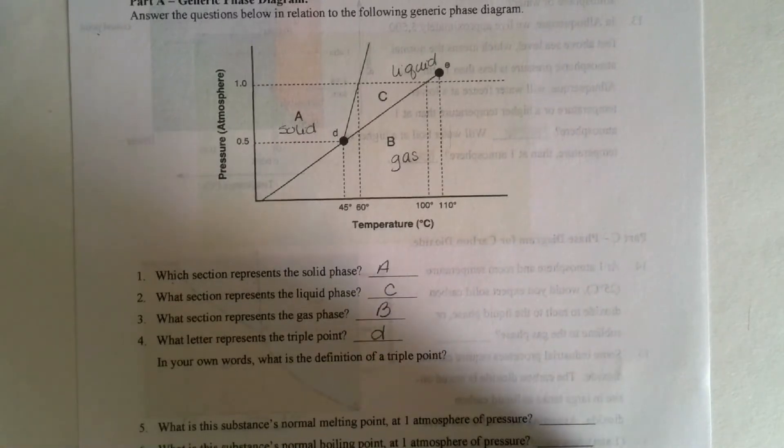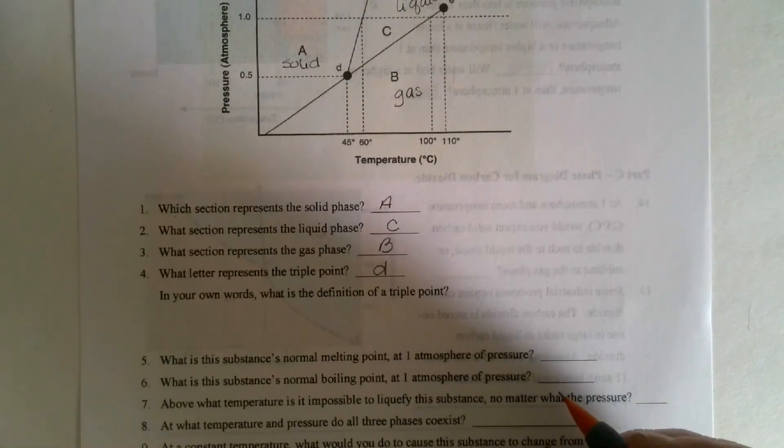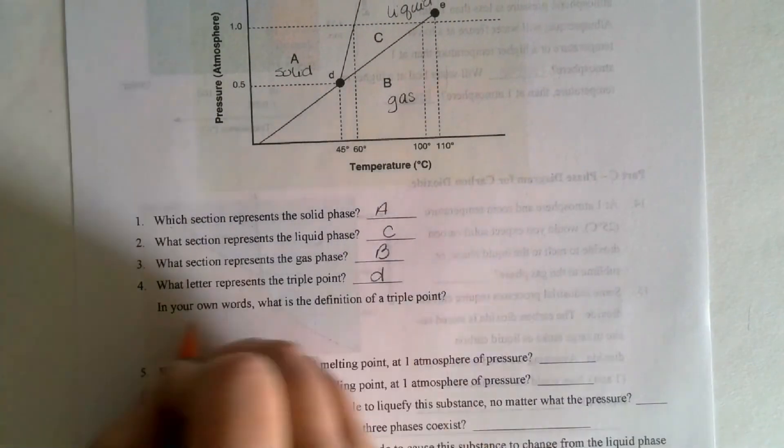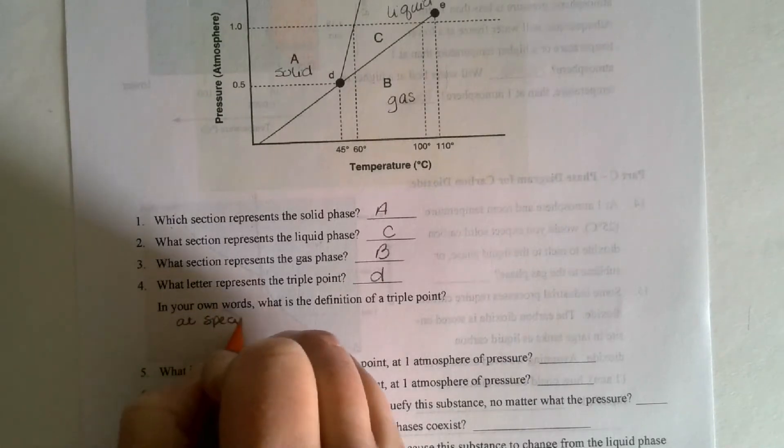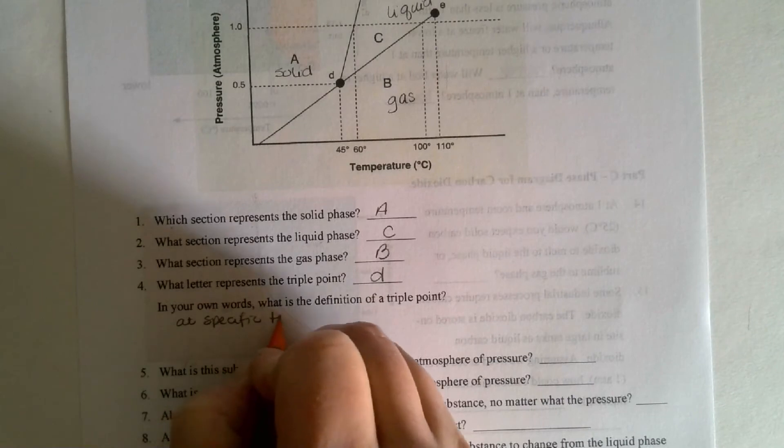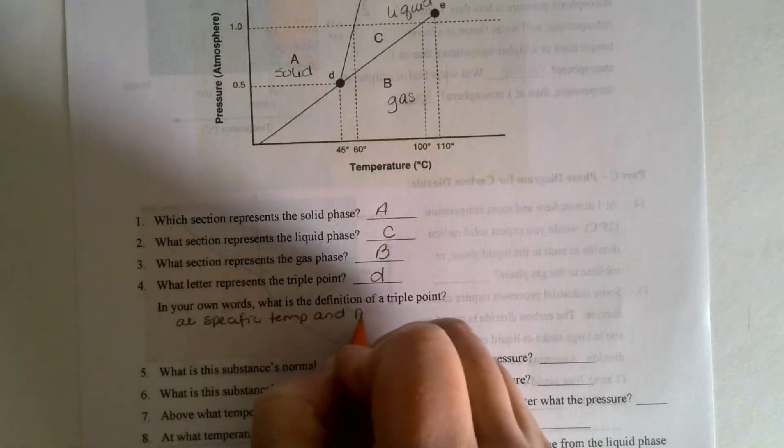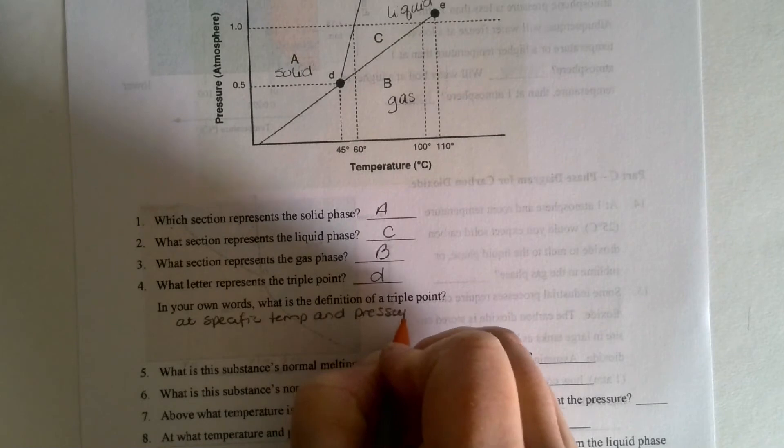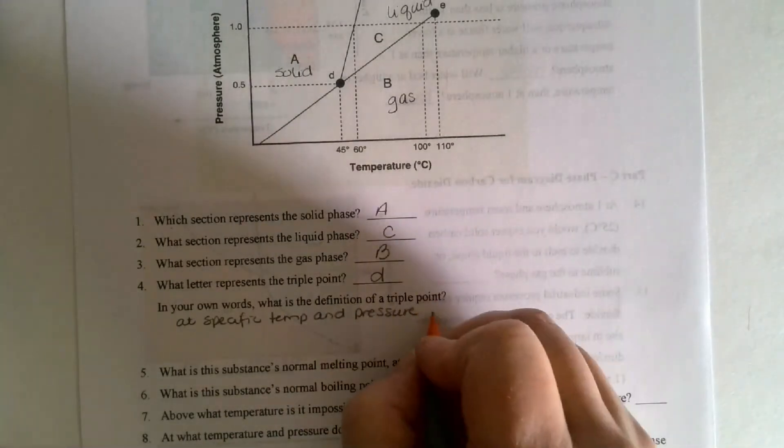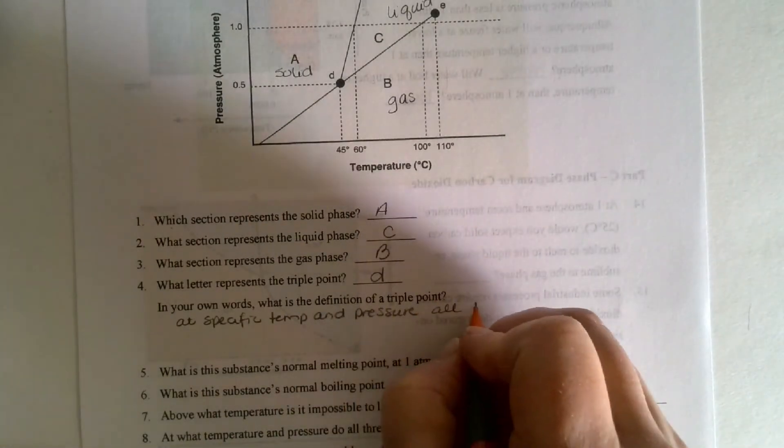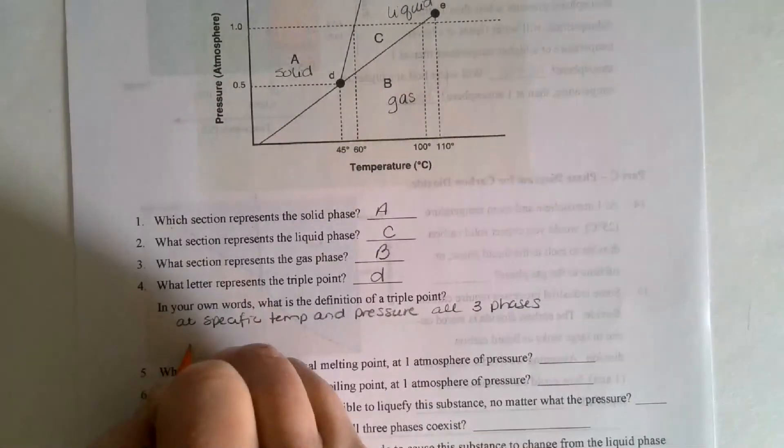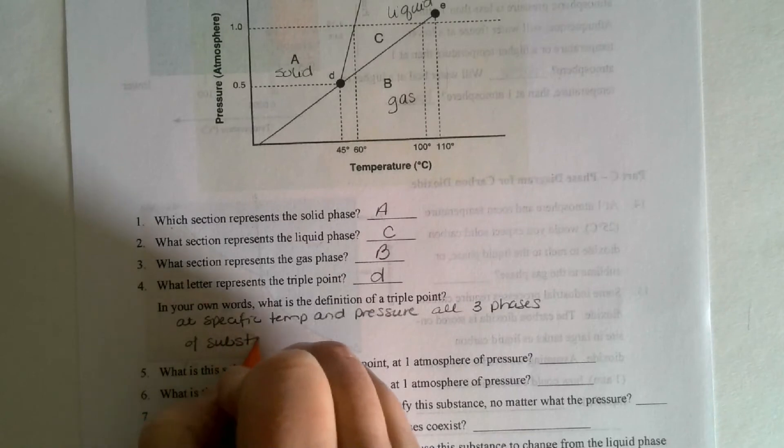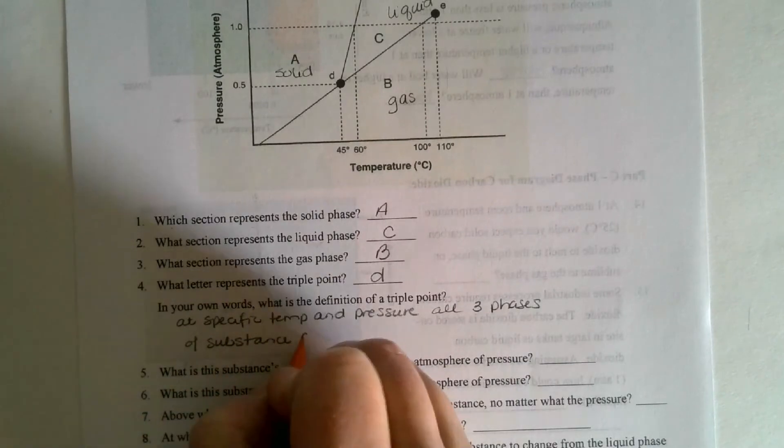In your own words, what is the definition? So think about what I've said so far. What is the definition of a triple point? At a specific temperature and pressure, all three phases of the substance coexist.